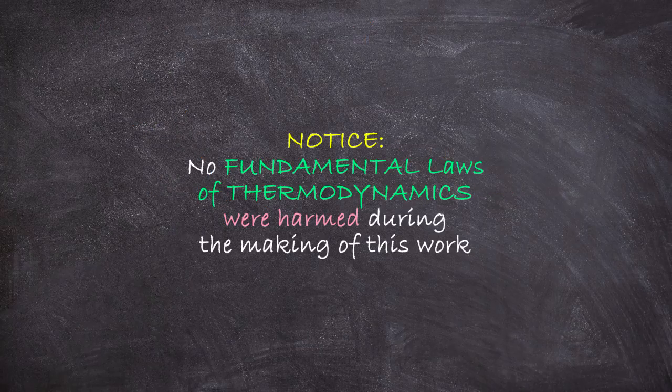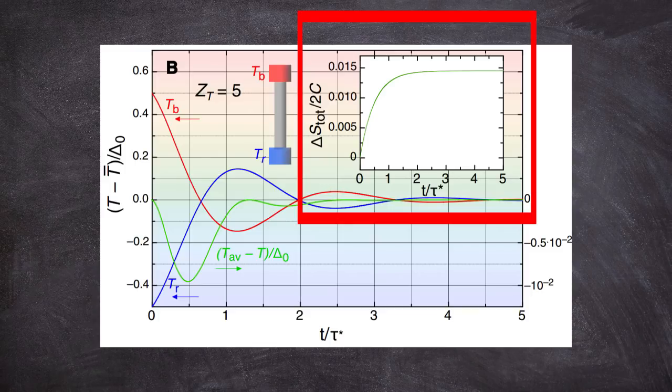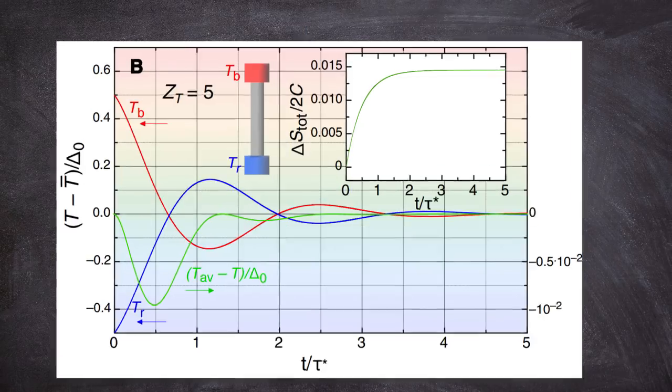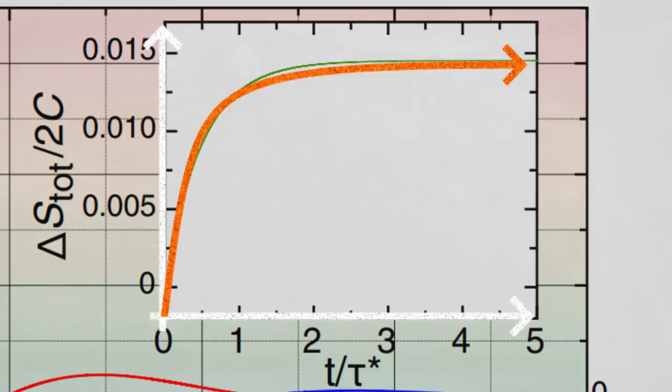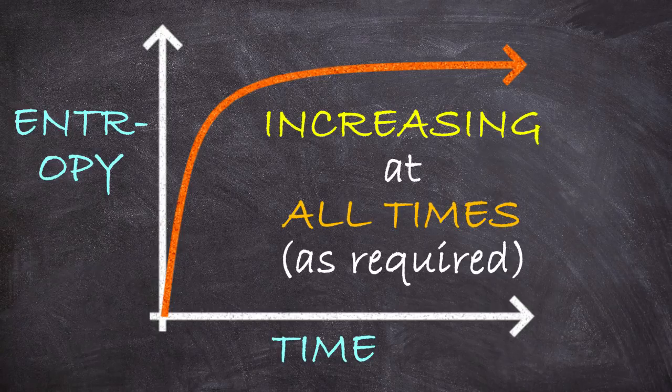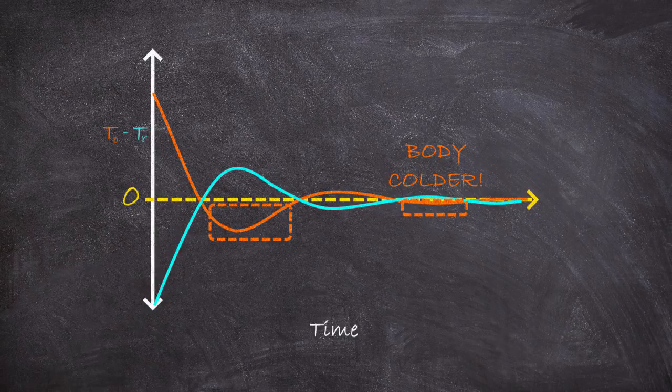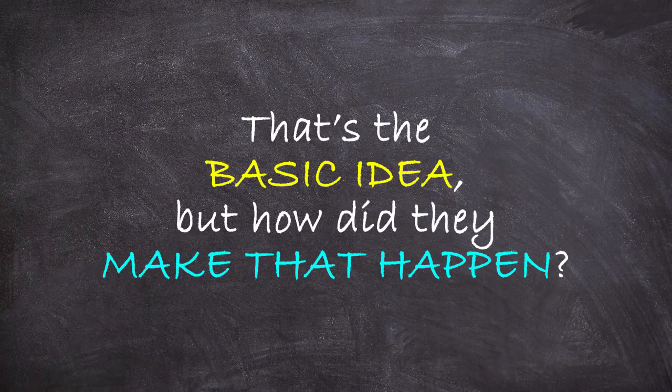To make doubly sure that no laws of thermodynamics have been harmed in this system, they also explicitly calculated the total entropy of this system for both bodies combined as a function of time, which you can see here. The second law of thermodynamics says that entropy must always increase in a thermodynamic system—that is indeed happening here as they trade back and forth, even though there are times when the initially hotter object is actually then the colder one. So that is the overarching idea, but how did they do it specifically?